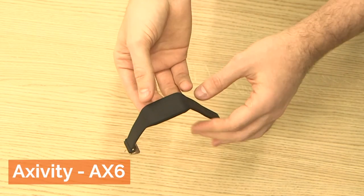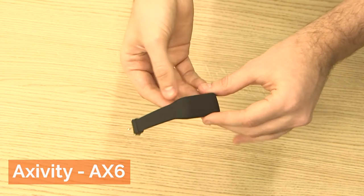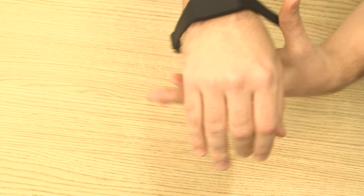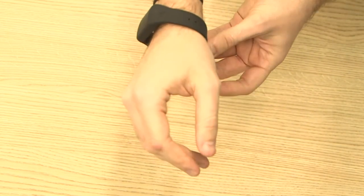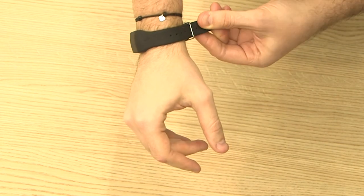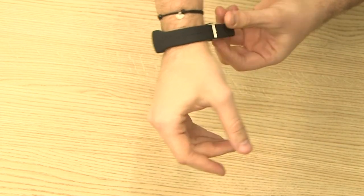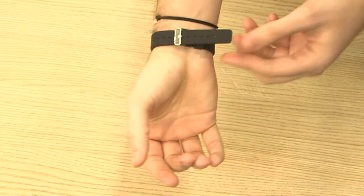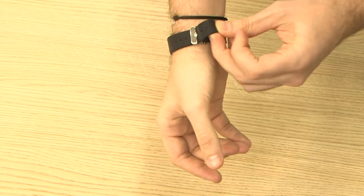Here we have Axivity's AX6 device. It's a wrist-worn band for movement tracking. You just place it on your wrist and strap it in. The strap accommodates a large range of wrist sizes. It comes in two colors, black as we see here, but also light blue. It's made from silicone, and because of that it's waterproof.